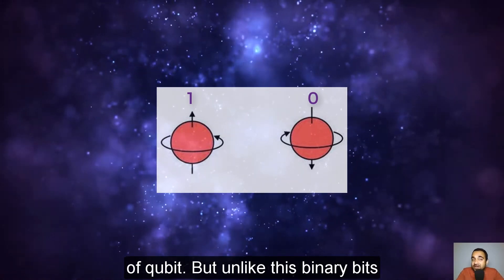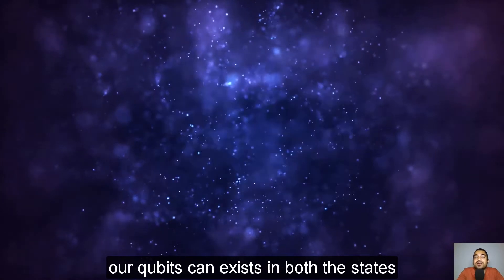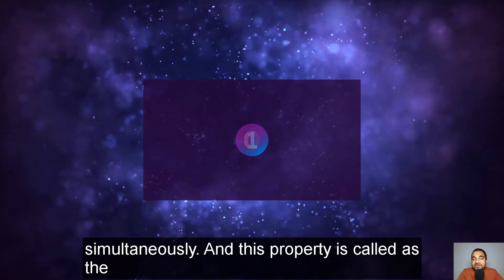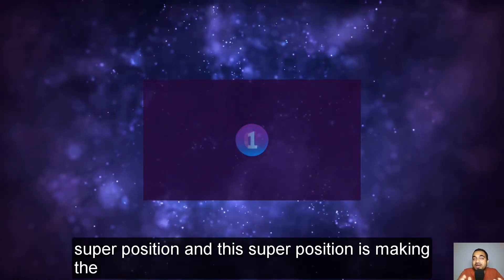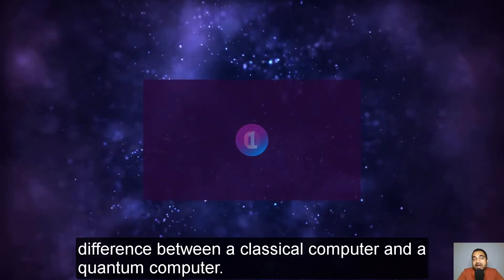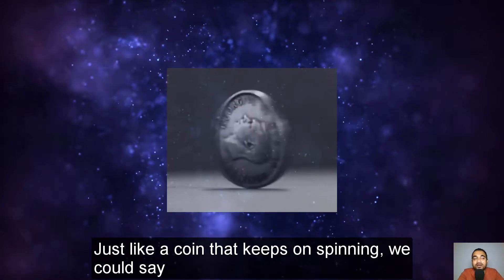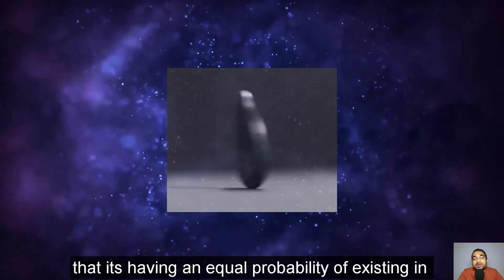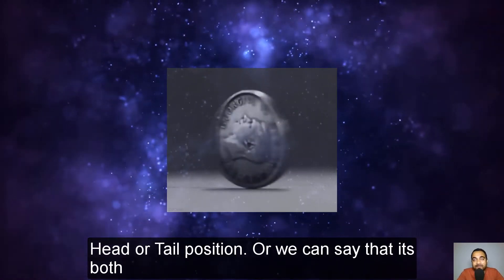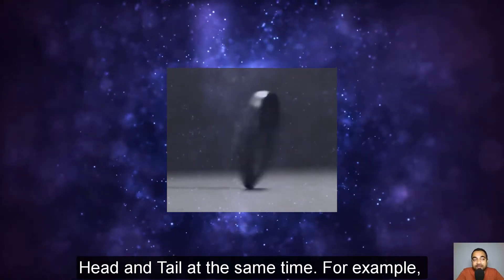But unlike binary bits, our qubits can exist in both states simultaneously. This property is called superposition, and this superposition is making the difference between a classical computer and a quantum computer. Just like a coin that keeps spinning, we could say that it's having an equal probability of adjusting in the head or tail position, or we can say that it's both head and tail at the same time.